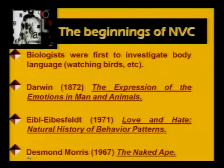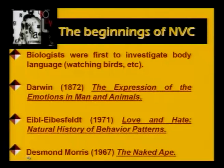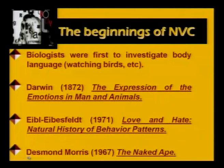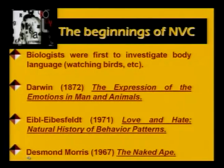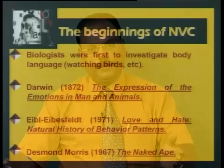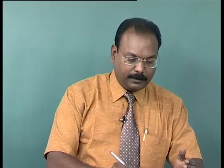This was followed by others like Eibl-Eibesfeldt, who wrote 'Love and Hate: Natural History of Behavior Patterns.' They started understanding behavior in terms of patterning, certain universal givens, and then followed by Desmond Morris and the famous book 'The Naked Ape.' All actually deal with animals, their behavior, and then try to correlate that behavior with mankind, human beings.